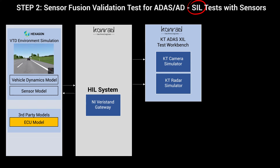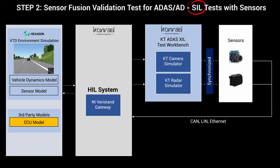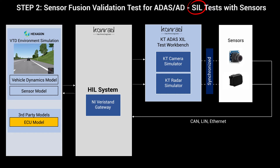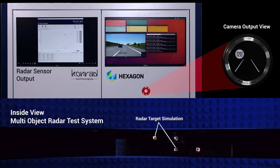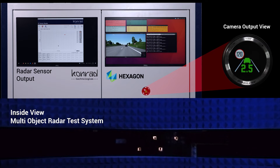For step 2 of the demonstration, the same ACC and ECU models from step 1 will be tested using the same scenario to generate real-time sensor input from the sensors and the Conrad ADAS XIL test workbench. The bottom of the screen shows the inside view of the Conrad Moving Angle and Object Radar Test System, specifically focusing on the antennas used for the radar object simulation.